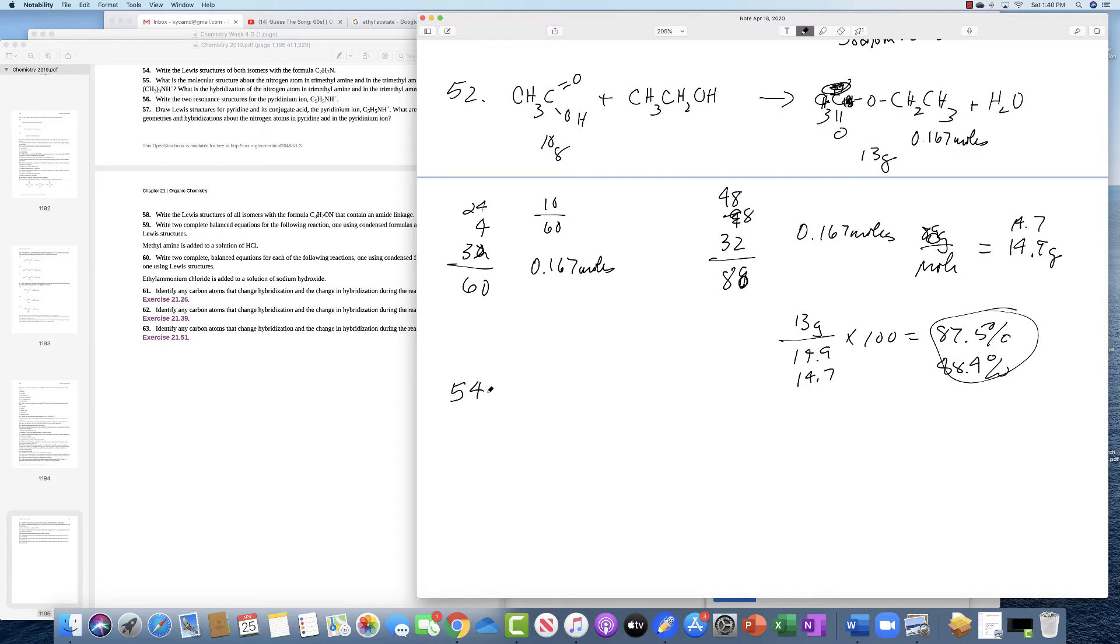Number 54: Write the Lewis structure for both isomers of this, which is an amine. So you have two possibilities here. CH3, CH2, NH. So that's one possibility.